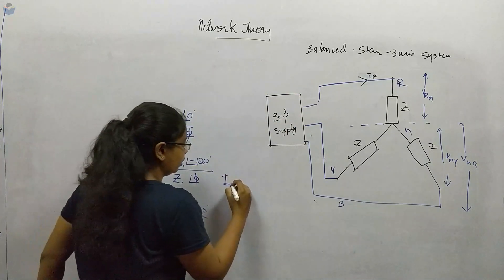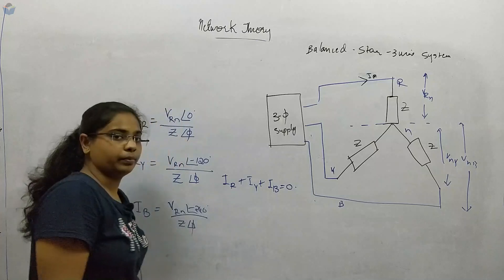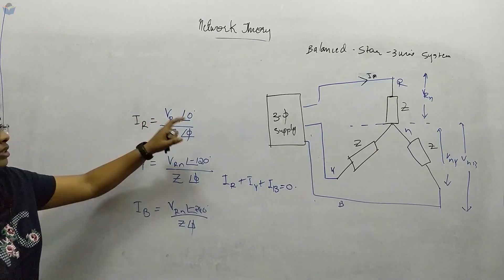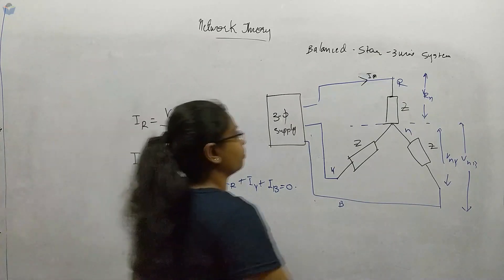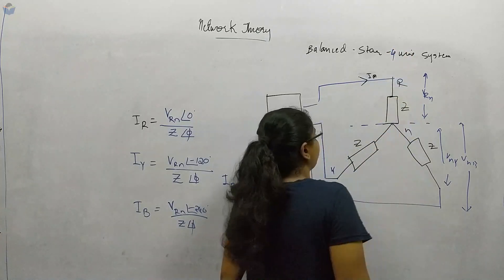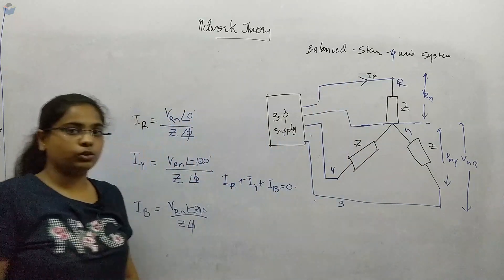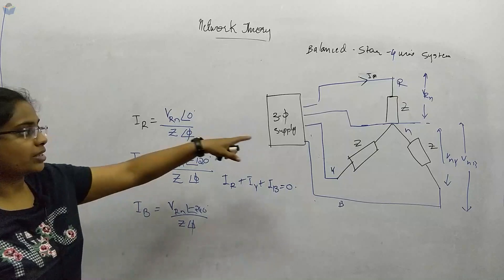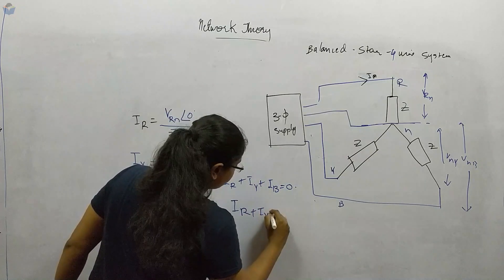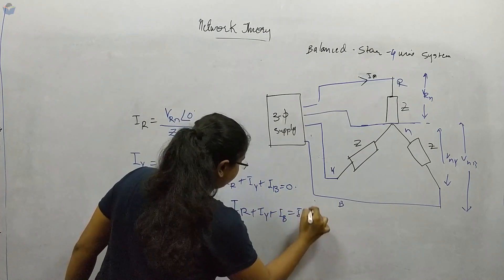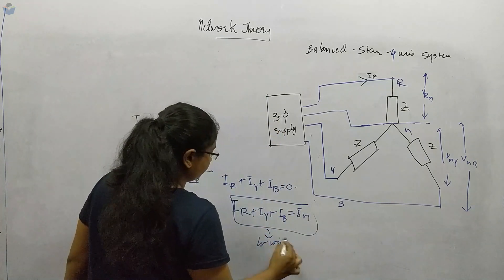When you add IR plus IY plus IB, you will get zero as the resultant current — that is the balanced three-phase three-wire system. For the four-wire system, the neutral is connected to the supply. When this neutral is connected, there are no changes in the phase currents, but IR plus IY plus IB will be equal to IN.